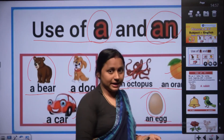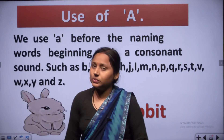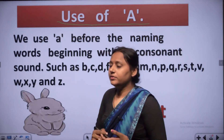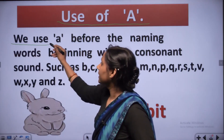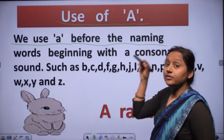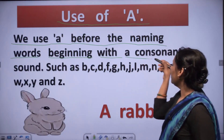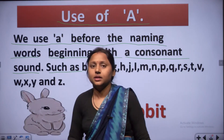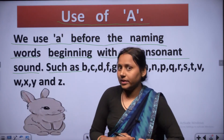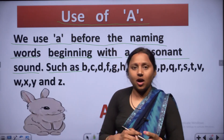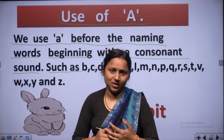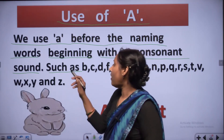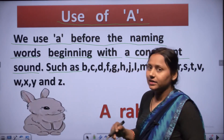Now where do we use A? We use A before naming words beginning with a consonant sound. We already know there are 26 letters in the English alphabet, and there are 5 vowel sounds and 5 vowel letters. What are they? A, E, I, O, U. Except these, all the other letters are consonants.